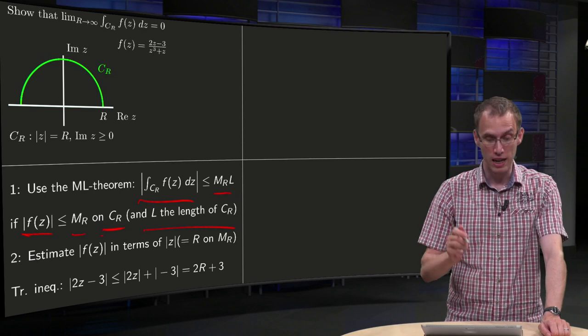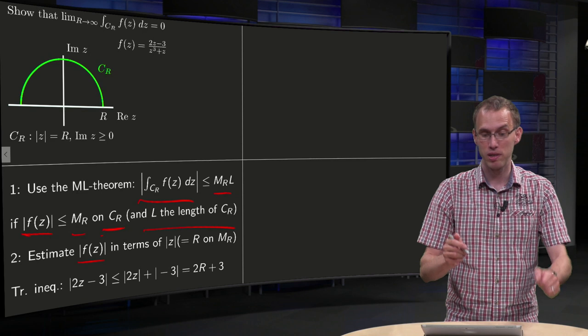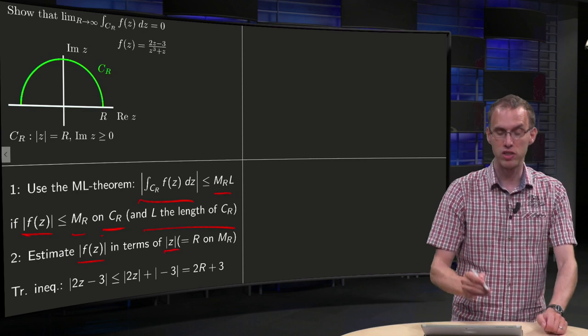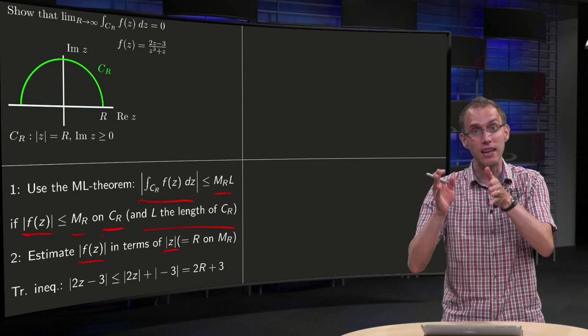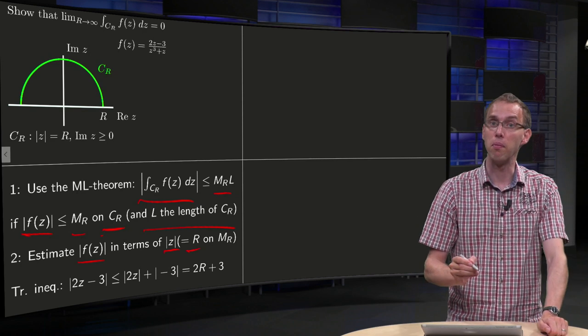Now we have to estimate the norm of f(z) and we know something about the norm of z, so we try to estimate the norm of f(z) in terms of the norm of z, which is equal to R on CR.